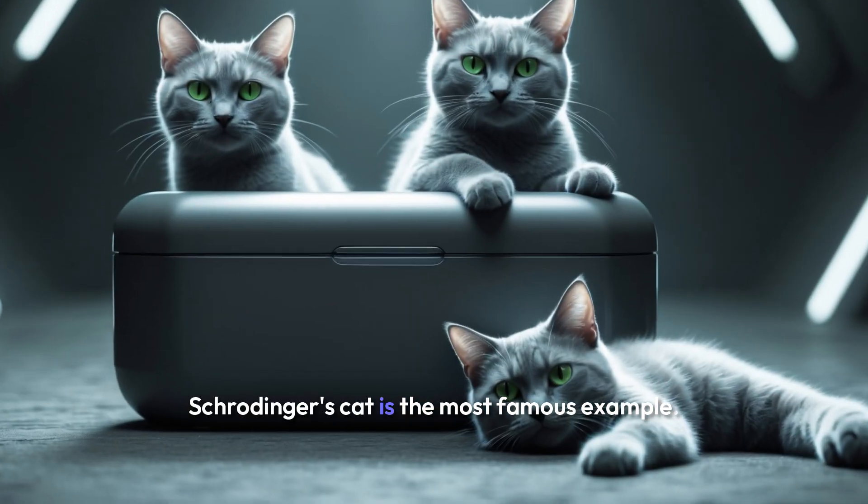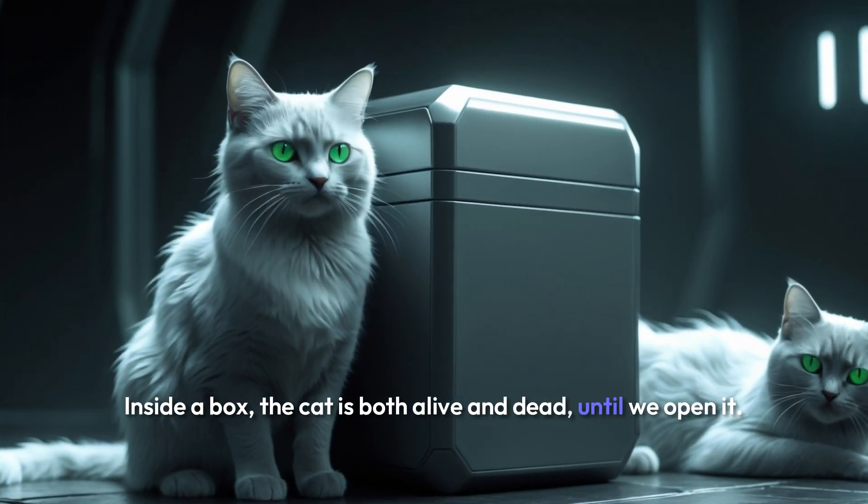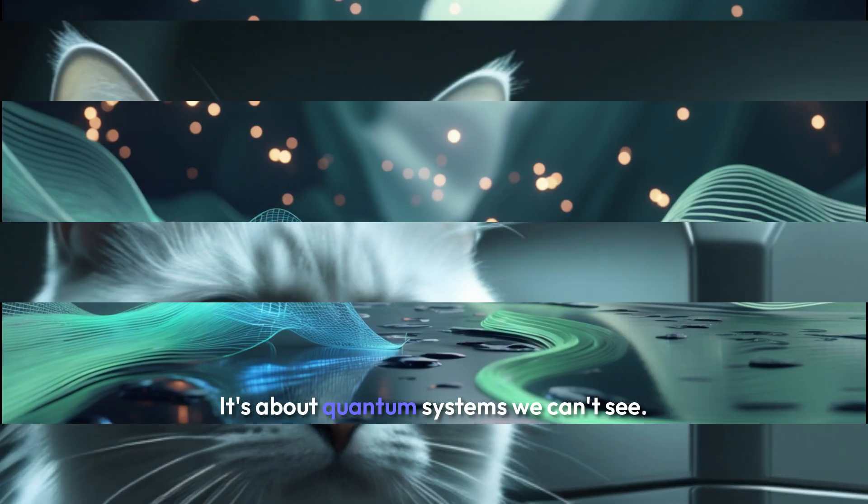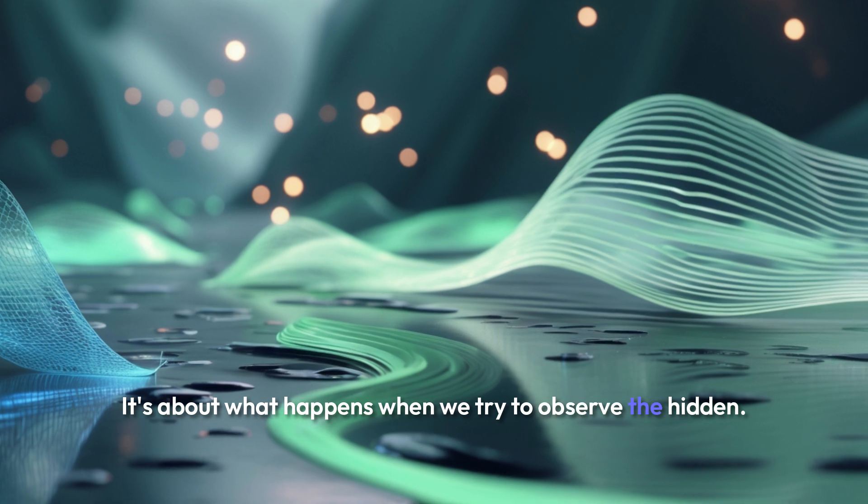Schrödinger's cat is the most famous example. Inside a box, the cat is both alive and dead, until we open it. But it's not about the cat. It's about quantum systems we can't see. It's about what happens when we try to observe the hidden.